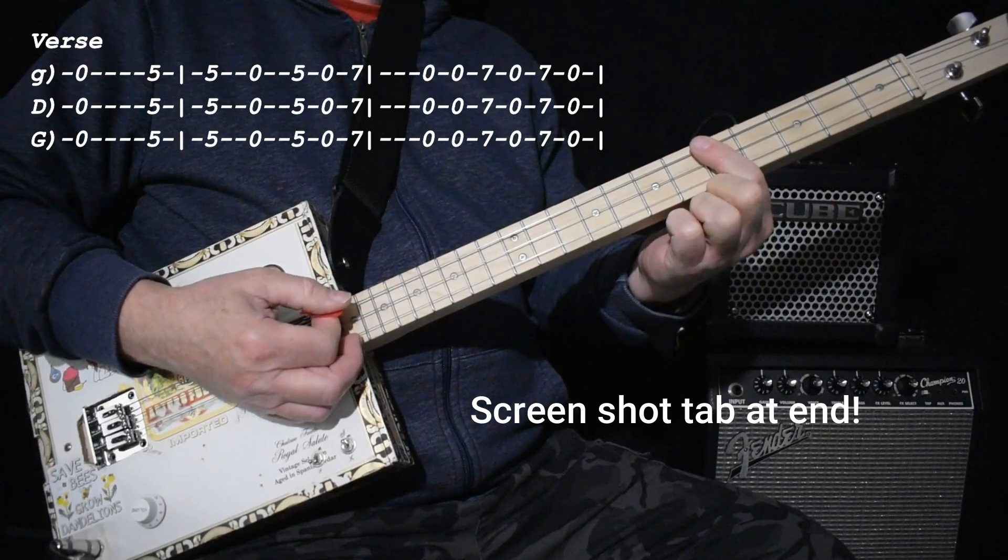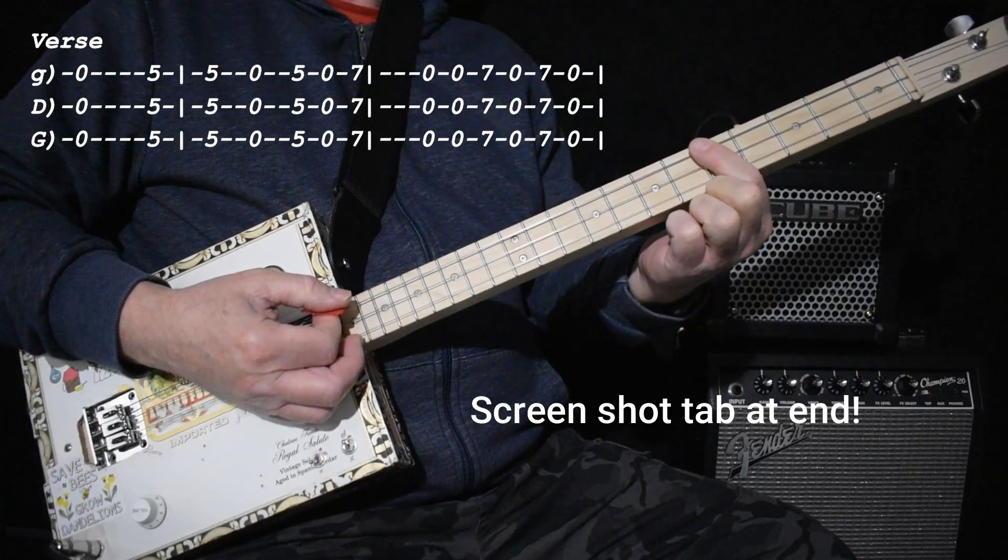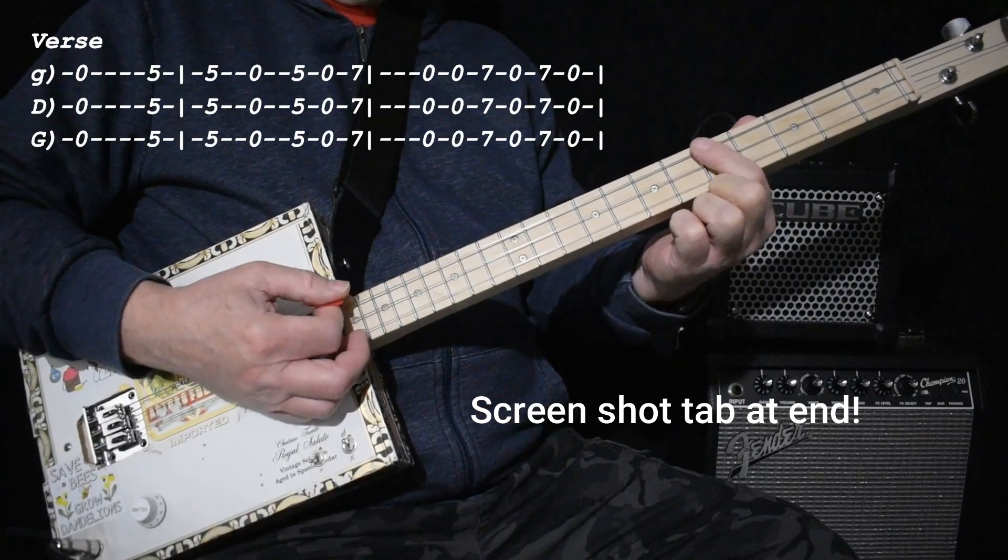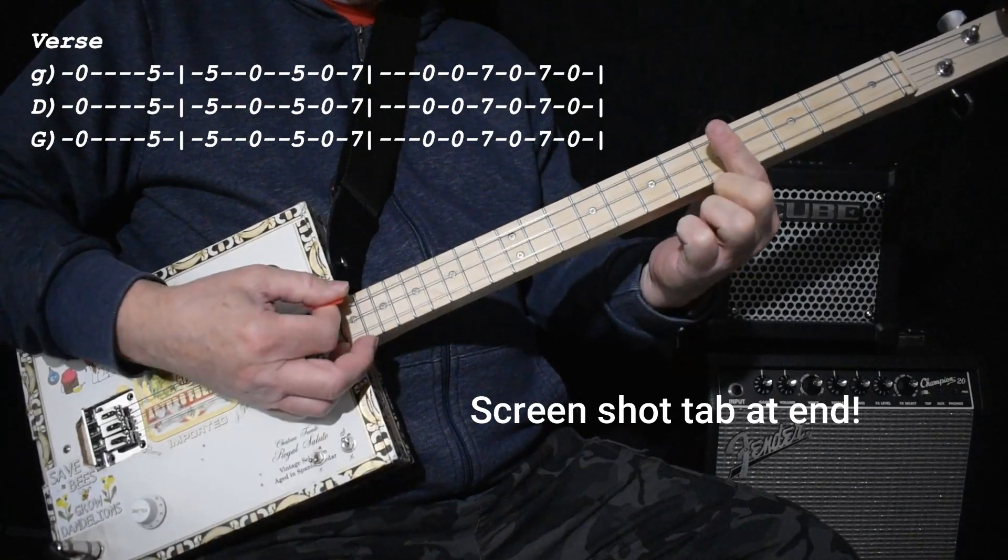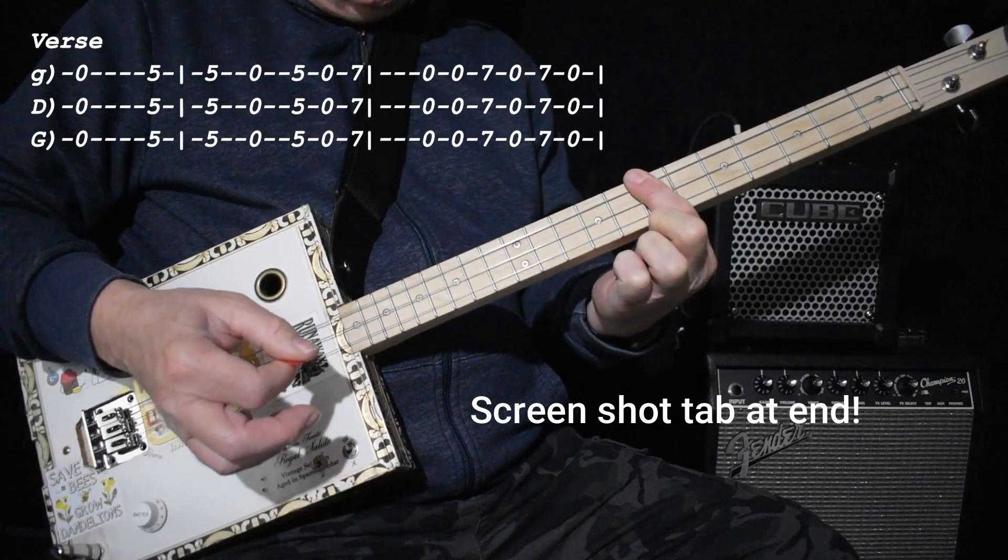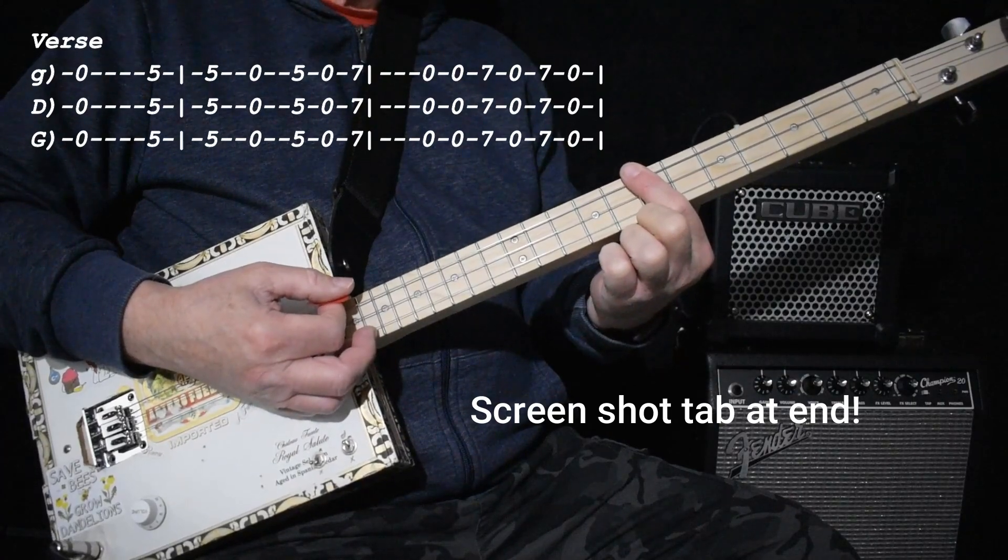And it's like a circle. It just keeps on going around. [plays] And a couple of those zeros are really quick, like this one. [demonstrates] It's going right to the seven there.